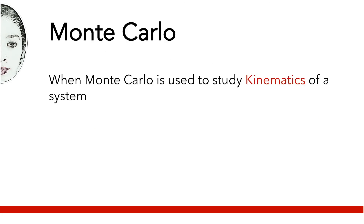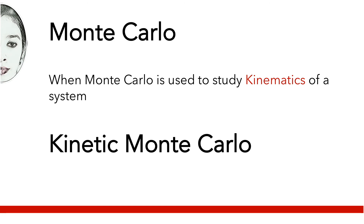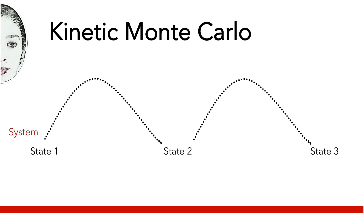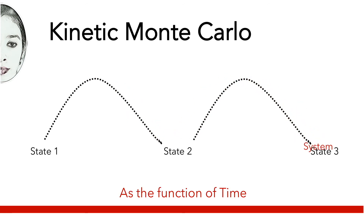When Monte Carlo is used to study kinematics of a system, it is called kinetic Monte Carlo. Kinetic Monte Carlo differs from Monte Carlo in that the atomic system undergoes dynamic evolution from one state to another, which is studied as a function of time.